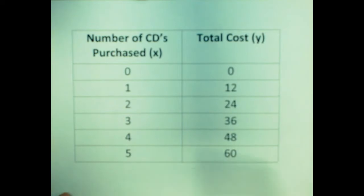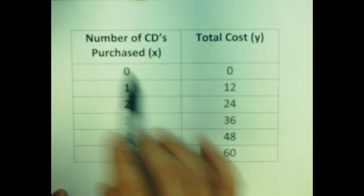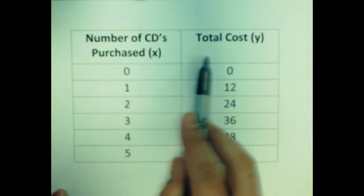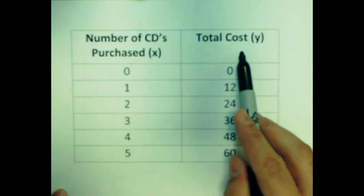Today we're going to learn how to determine when we have a proportional relationship from a table. One thing you want to always make note of is what is actually going on in your table. We can see within our table there is some sort of purchasing going on between the number of CDs and then what your total cost will be.